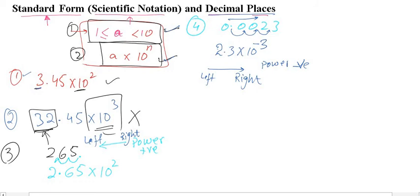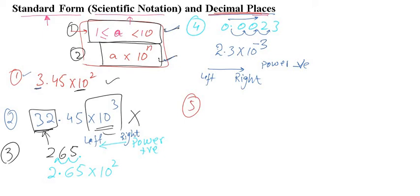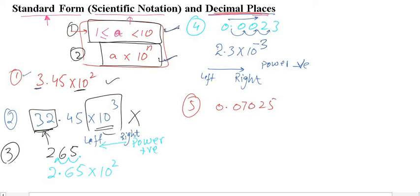Now we move to decimal places, which is again very simple — we have done this many times in lower classes. If a question says to write your answer in one, two, or three decimal places, we follow the rounding rule. For example, given 0.07025, if he says write in two decimal places: the digits after the decimal are 1st, 2nd, 3rd, 4th, and 5th — so this is a five decimal place number, and we need to write it to two decimal places.